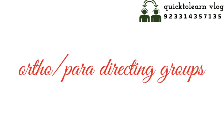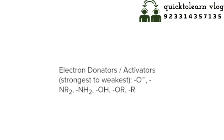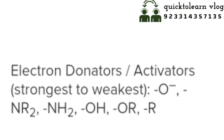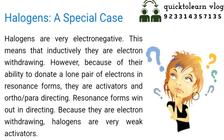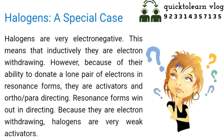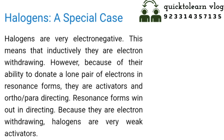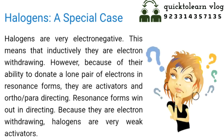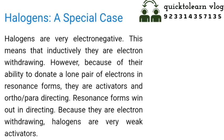Ortho-para directing groups are basically electron donators and activators. Examples include -NR₂, -NH₂, -OH, -OR, and alkyl groups (R). Halogens are a special case — they are very electronegative, meaning inductively they are electron withdrawing. However, because of their ability to donate a lone pair of electrons through resonance, they are ortho-para directing. Resonance wins out in directing, but because they are electron withdrawing, halogens are very weak activators.